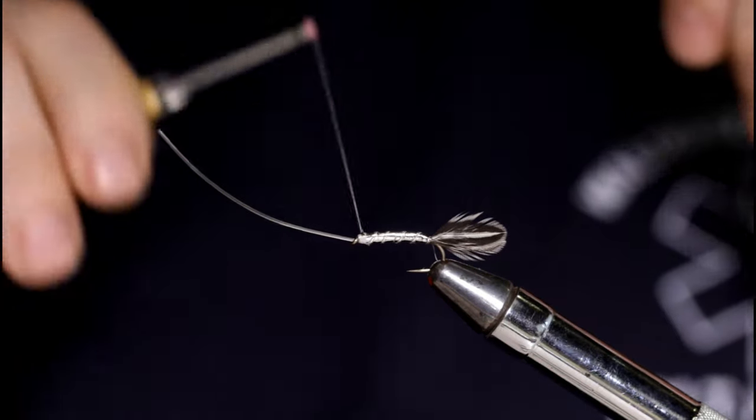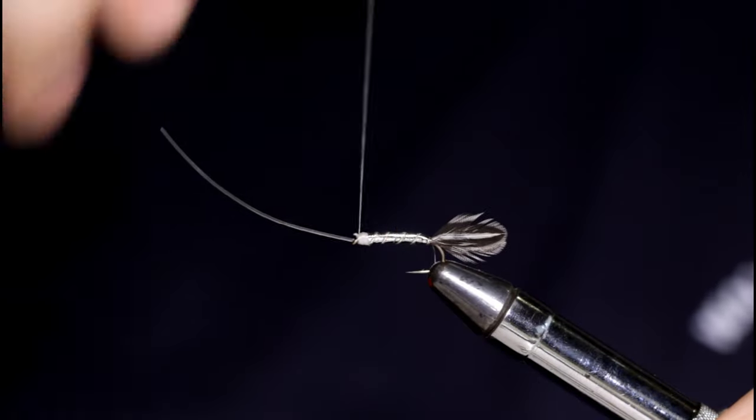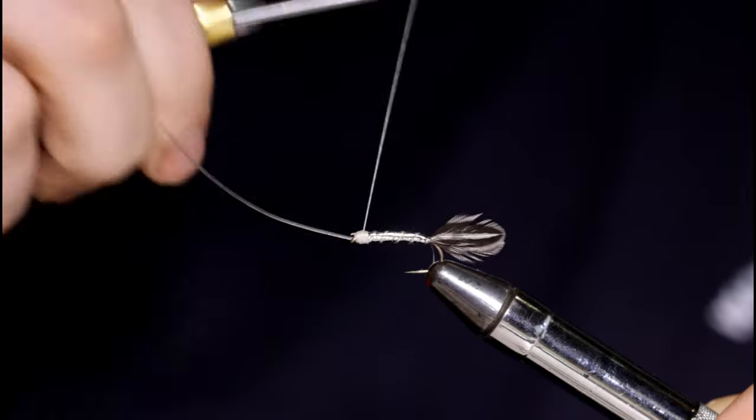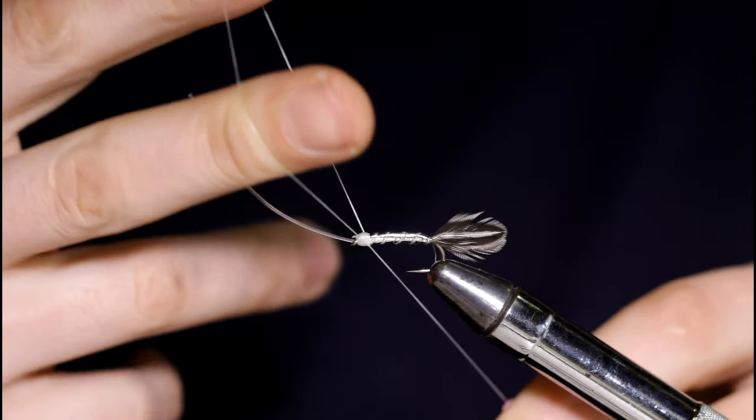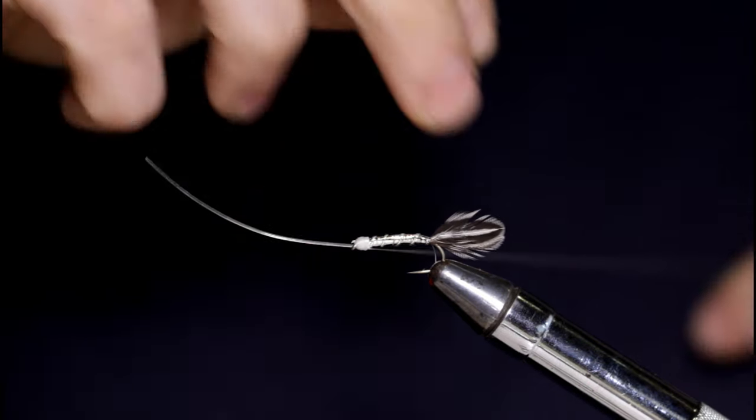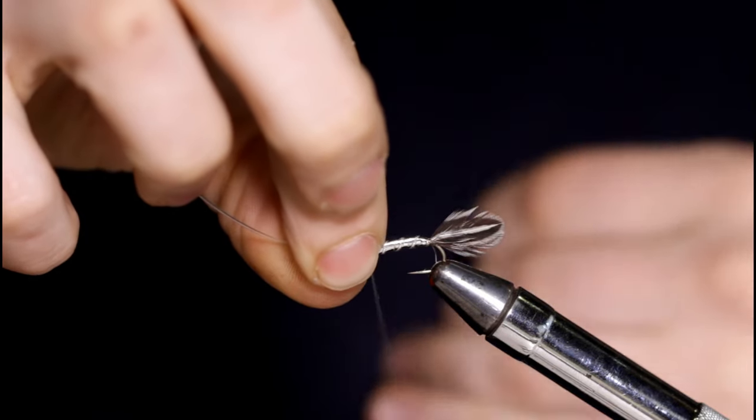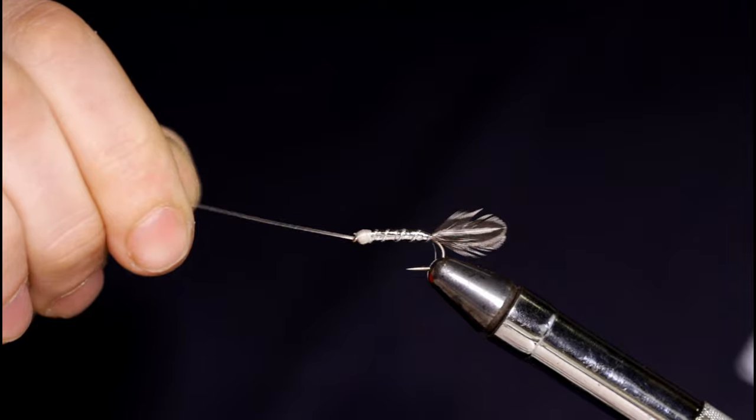Lots of people like to tie this with a red head here on the rear hook as well as the front hook, but I don't mind leaving the rear hook white. So I'll just finish this up with a few half hitches, come in and snip the thread off. Take this out of the vise and make room for the front hook.